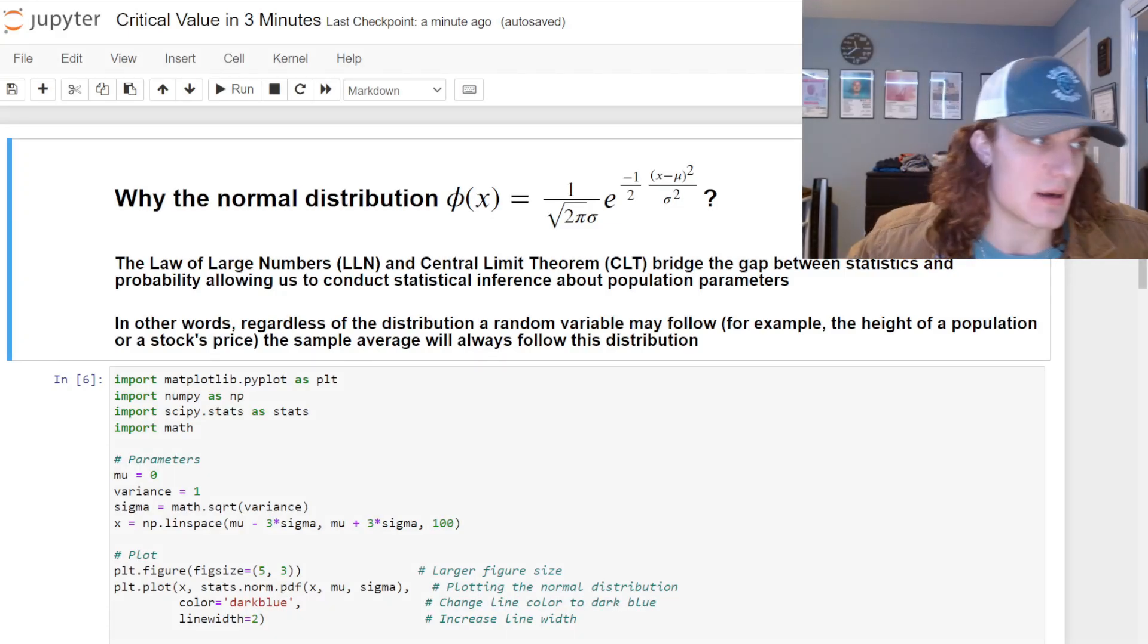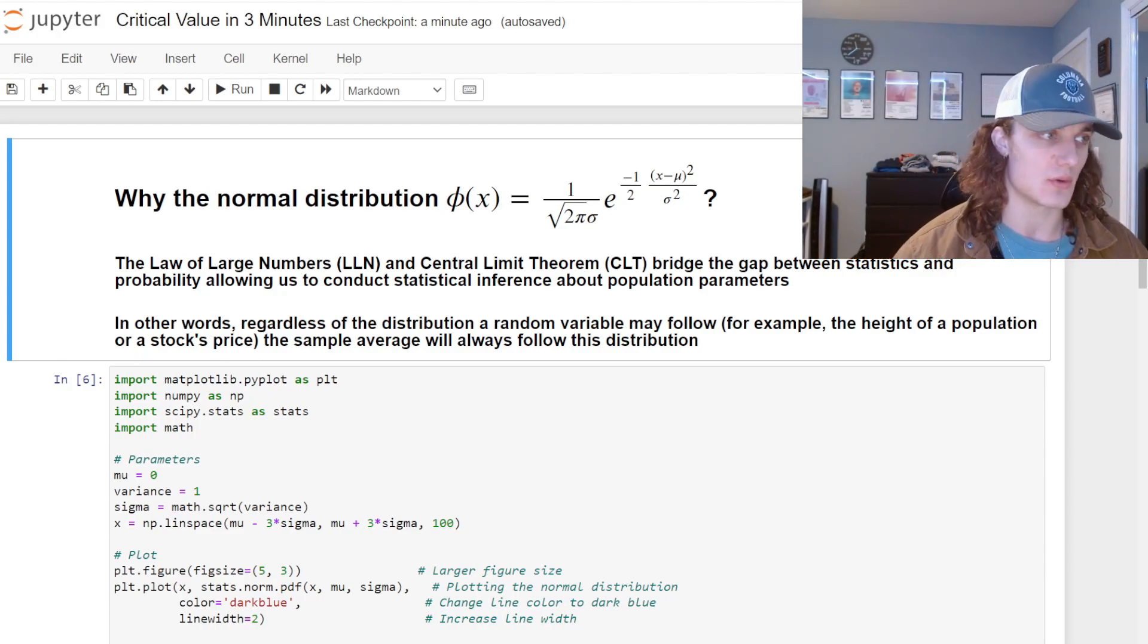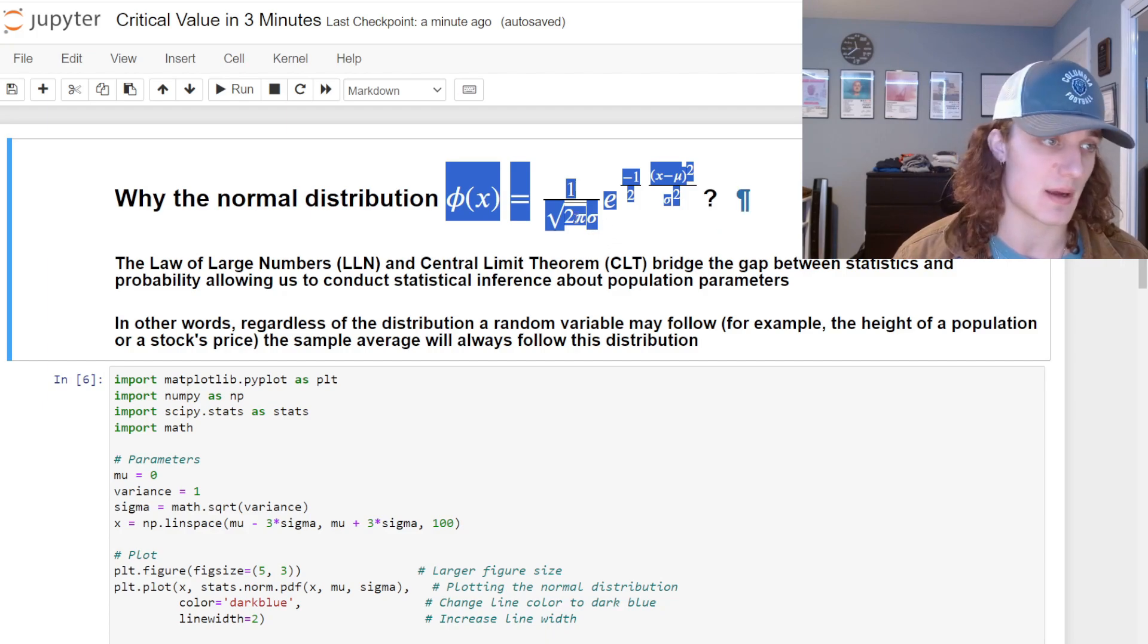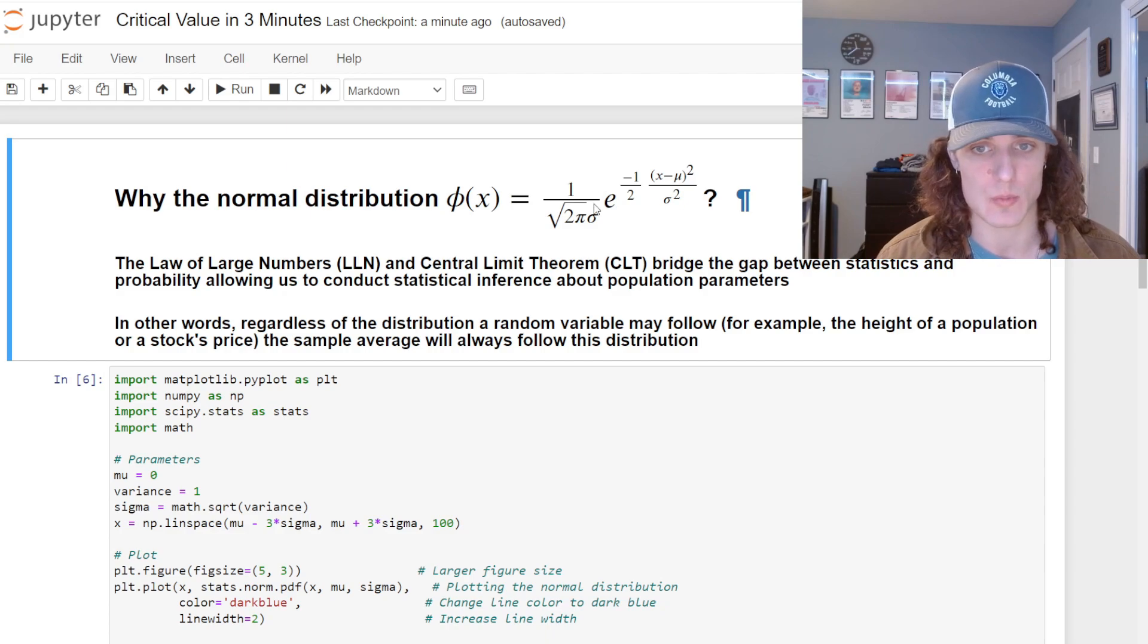We're back. Give me three minutes, I'll give you what a critical value is and why it is useful. So first we need to understand why the normal distribution. Usually we define lowercase φ (phi) as this - this is a probability density function. Not going to dive too much into this definition or why it's important, but what we do know...